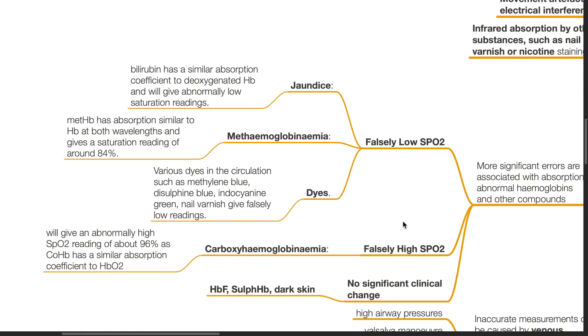Falsely low SpO2 can result in the presence of jaundice. Bilirubin has a similar absorption coefficient to deoxygenated hemoglobin and this will give an abnormally low saturation reading. In the presence of methemoglobin with absorption spectra similar to deoxygenated hemoglobin at both wavelengths, this gives a saturation reading of around 84%. In the presence of dyes such as methylene blue, disulfine blue, indocyanin green and nail varnish, falsely low readings will occur.